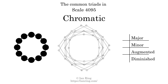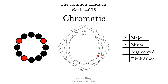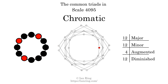Here are the common triads present in this scale. The diagram in the center is a graph of parsimonious voice leading between triads. There are 12 major triads, 12 minor triads, 4 augmented triads, and 12 diminished triads. Here is a Hamiltonian path of parsimonious voice leading that uses all the triads.